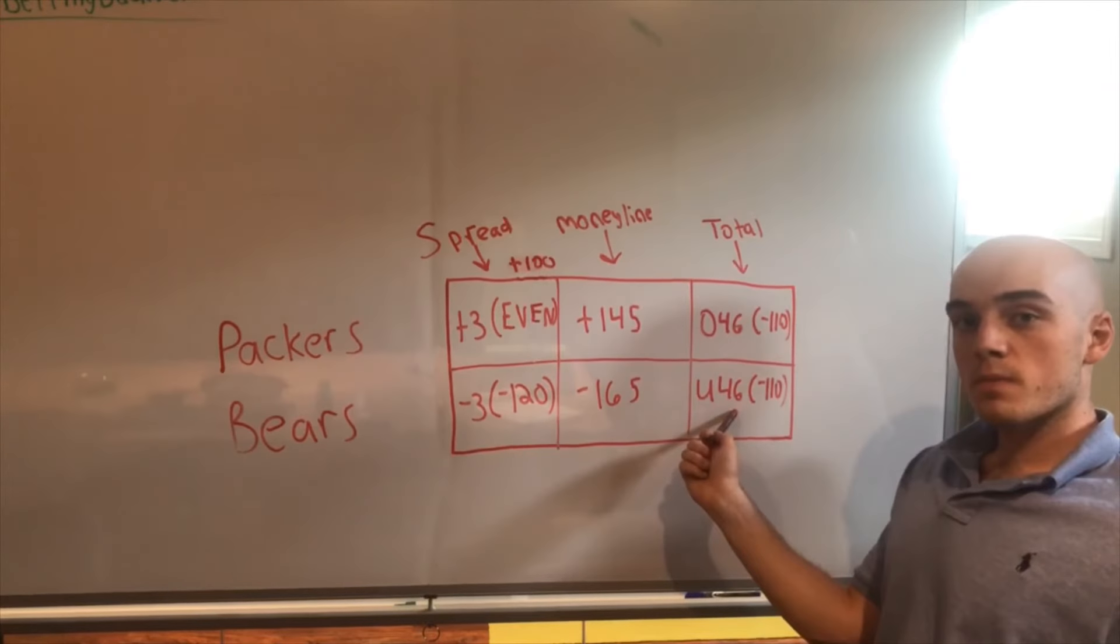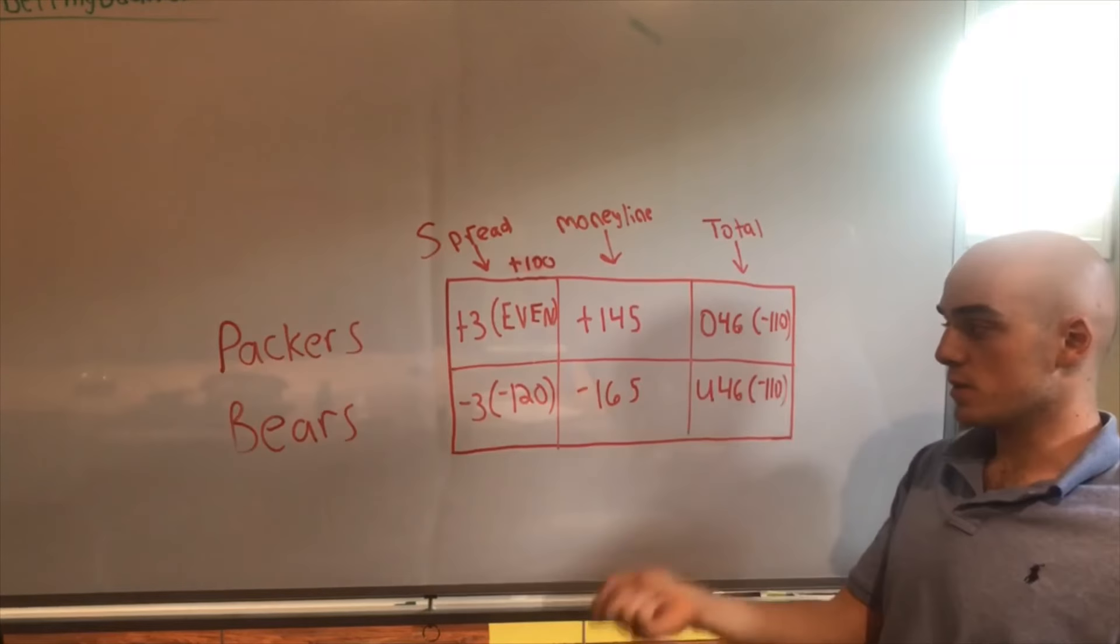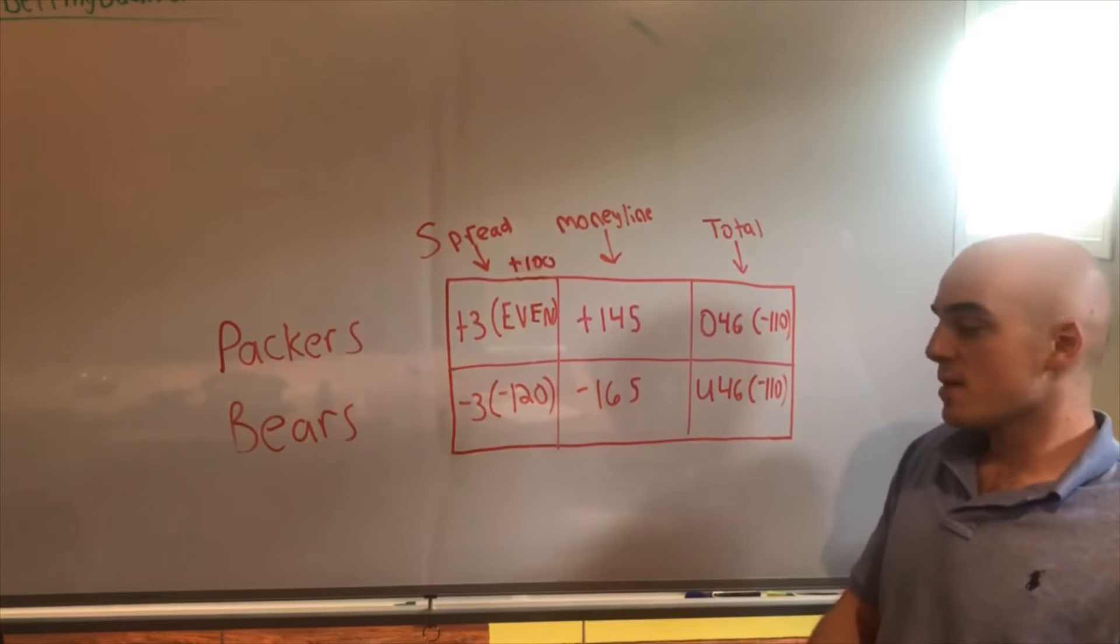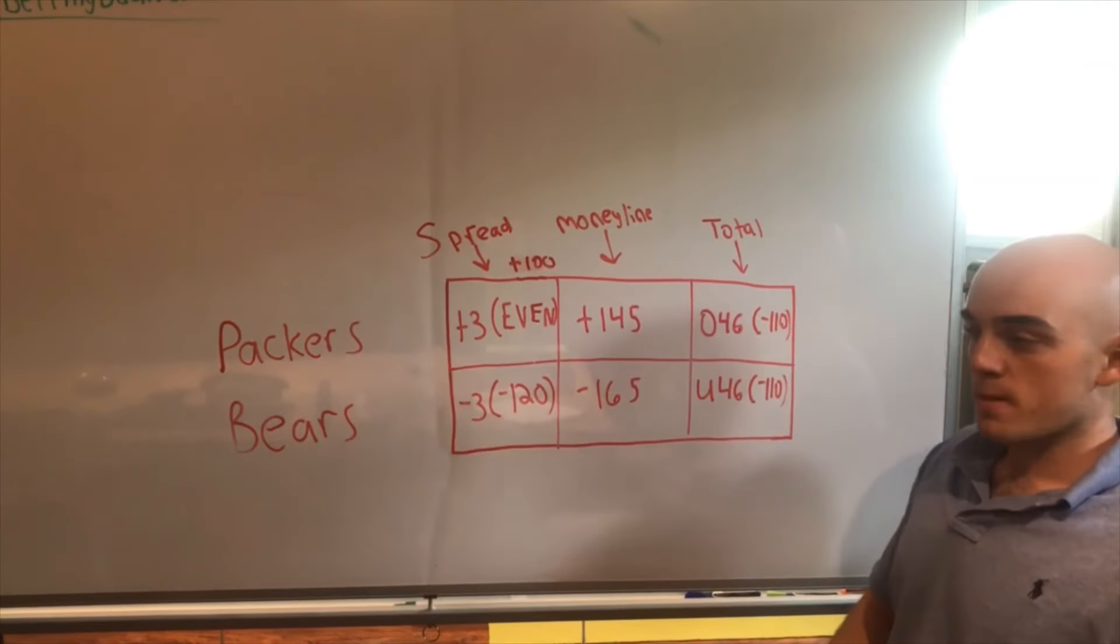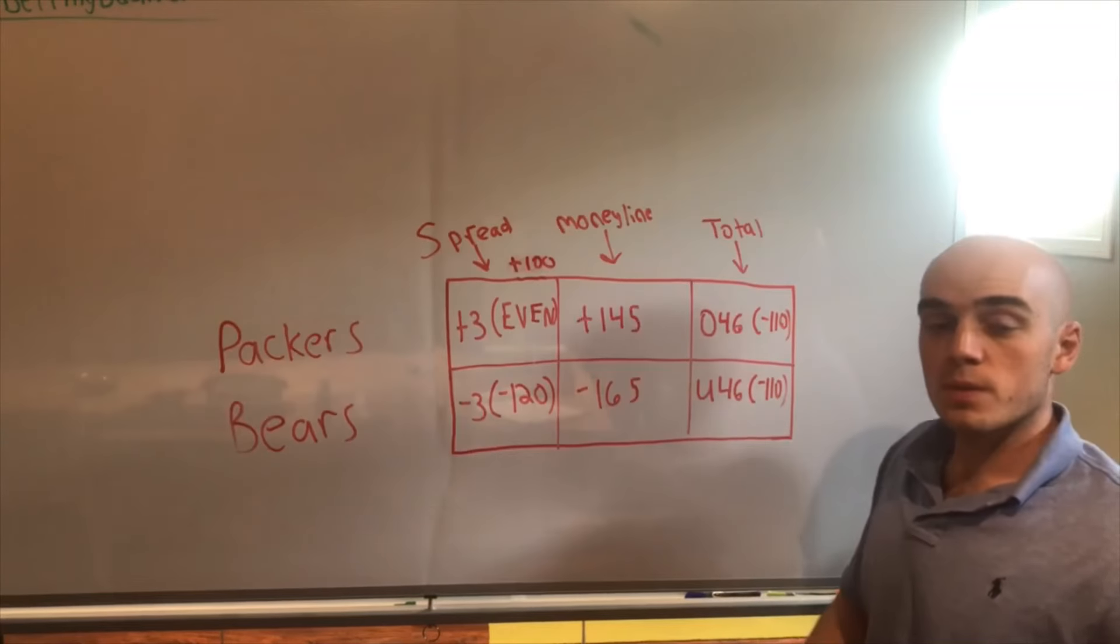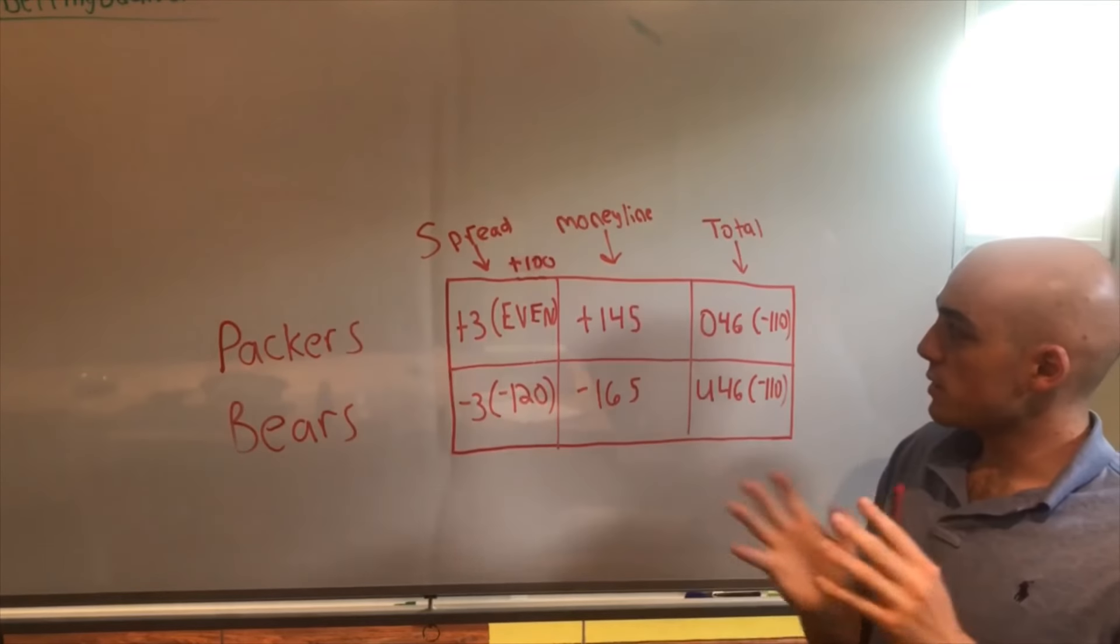If you bet on the under in this game and the final score is 24 to 21, like I said, you have a total score of 45. 45 is under 46, you win your bet. And opposite for the over. So that's pretty much it - spread, money line, and total bets.